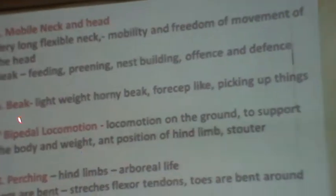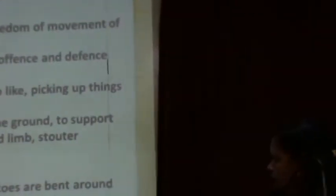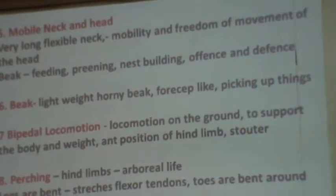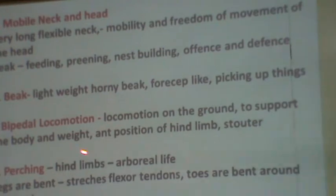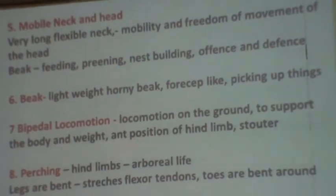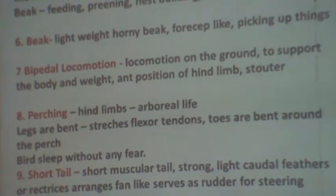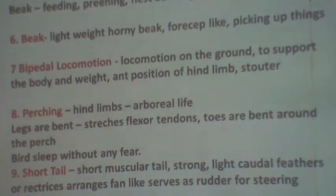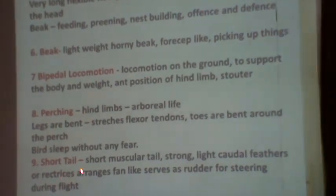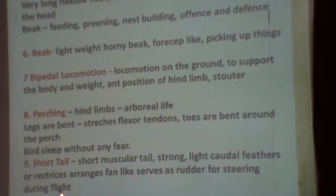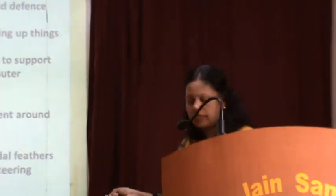Birds show bipedal locomotion, using only the hind limbs for movement. Perching is achieved with the help of the four toes of the hind limbs: three toes are forwardly directed and one is backwardly directed, helpful for perching. In modern birds the tail is short, internally supported by 13 or fewer caudal vertebrae that fuse to form the pygostyle. This short tail is externally covered by feathers, which may be short or long — for example, in the peacock, long tail feathers are present.